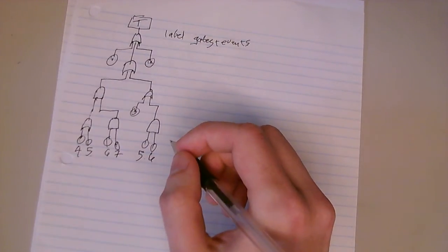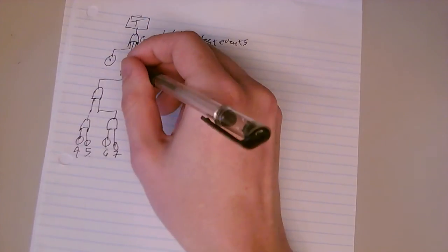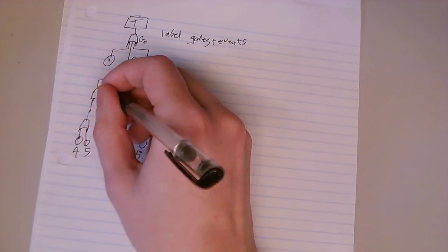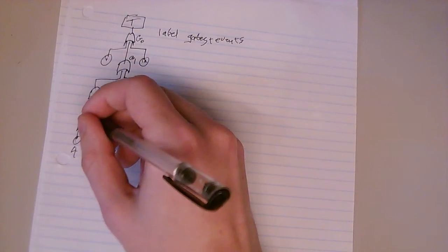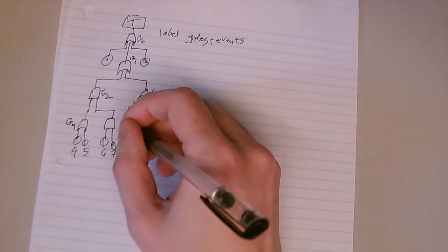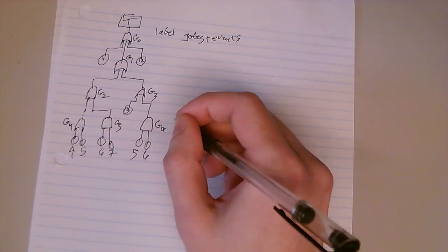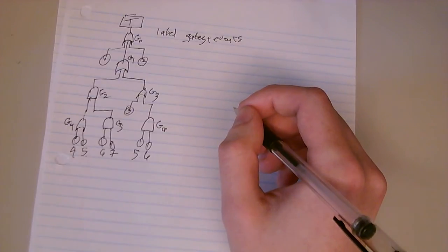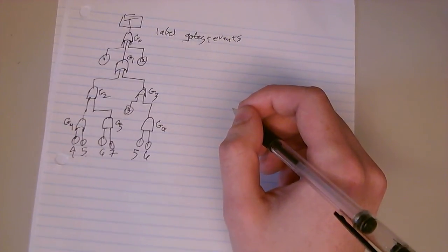And we'll use the gate notation G0, G1, G2, G3, G4, G5, and G6. So this is a fault tree.